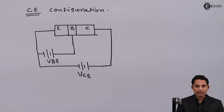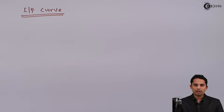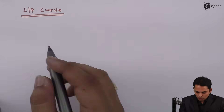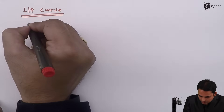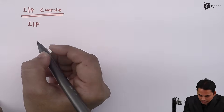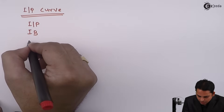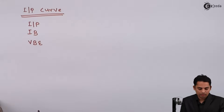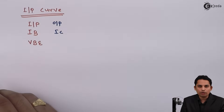Now we will plot the input characteristics curve for the CE configuration. Input characteristics is a graph of input current versus input voltage keeping output voltage constant. For the common emitter amplifier, the input current is base current IB, the input voltage is VBE, the output current is IC, and the output voltage is VCE.